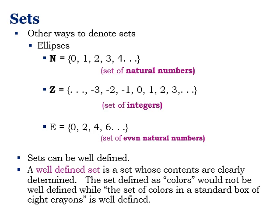A well-defined set is a set whose contents are clearly determined. For example, the set defined as 'colors' is not well-defined, while the set of colors in a standard box of 8 crayons is well-defined.